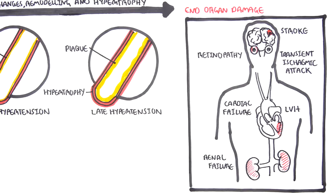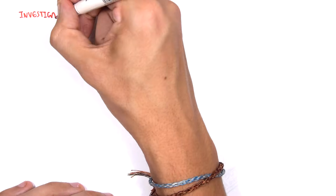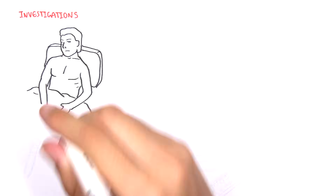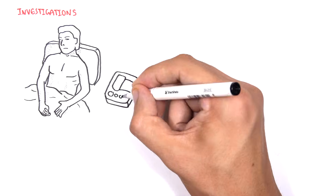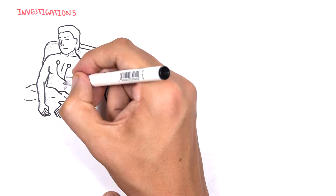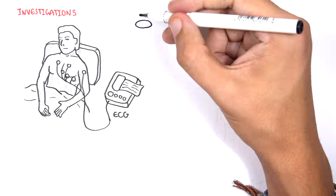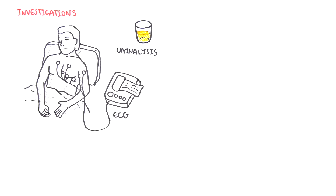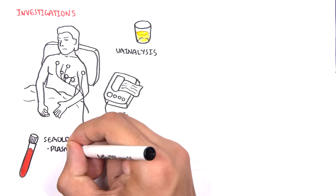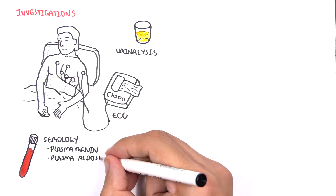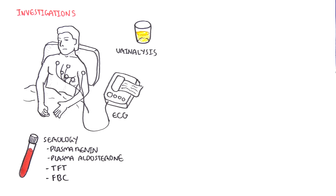Some investigations that should be performed in a patient with hypertension include ECG, or electrocardiogram, to check for cardiac function, urinalysis for renal function, and serology tests such as plasma renin, plasma aldosterone, the thyroid function test, and full blood count to rule out other differentials and to monitor hypertension.